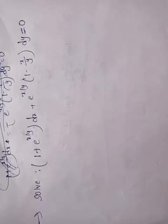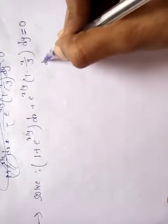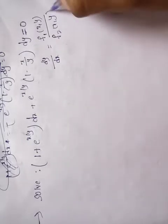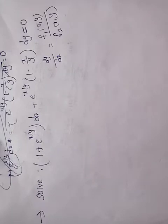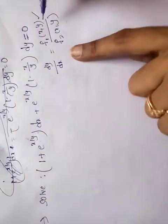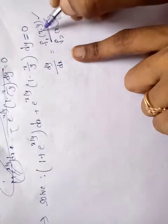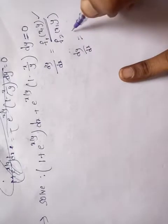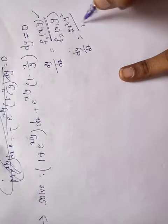This is a homogeneous differential equation. A homogeneous differential equation is of the form dy/dx = f1(x, y) / f2(x, y), where the numerator and denominator have the same degree. For example, (2x² - y²) / (x² - y²) — both numerator and denominator are of the same formula.